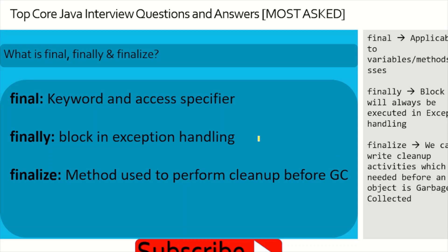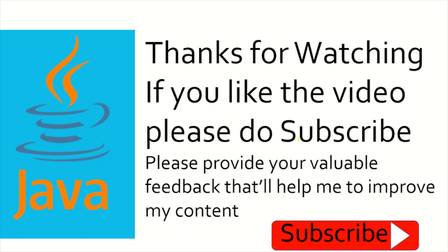One of the most asked interview questions: what is the difference between final, finally, and finalize? 'final' is a keyword/access modifier applicable to variables, methods, and classes. 'finally' is a block in exception handling that executes code irrespective of whether an exception occurs — commonly used for cleanup like closing database connections or files. 'finalize' is a method in the Object class that can be overridden to define cleanup activities before an object is garbage collected.